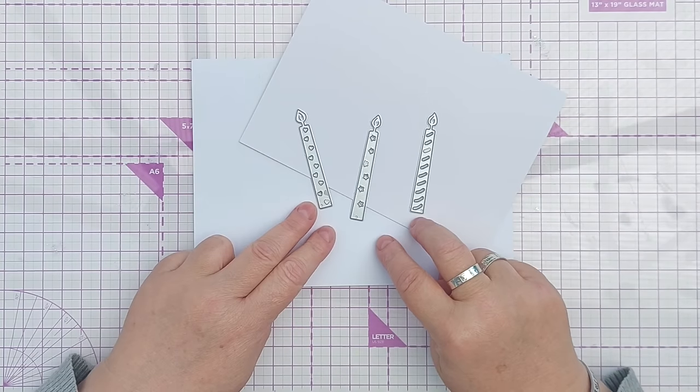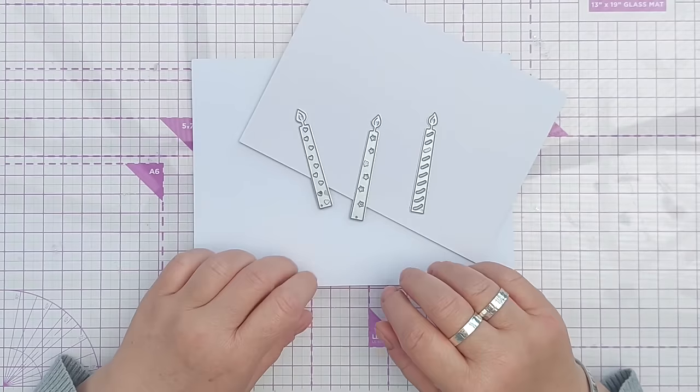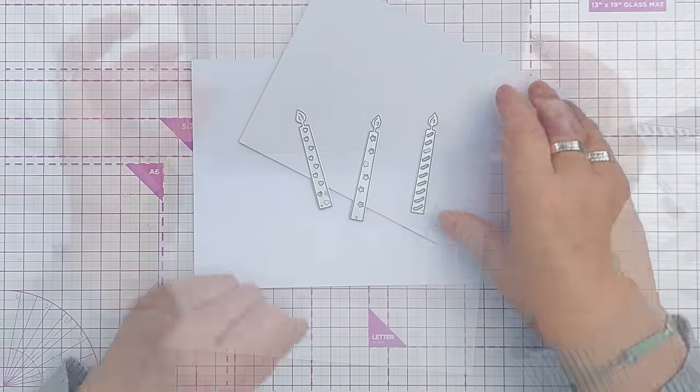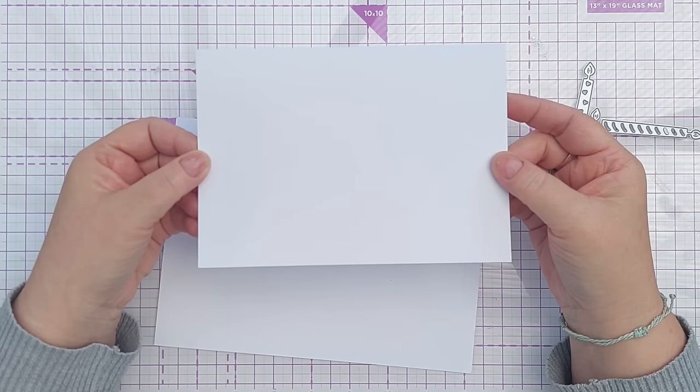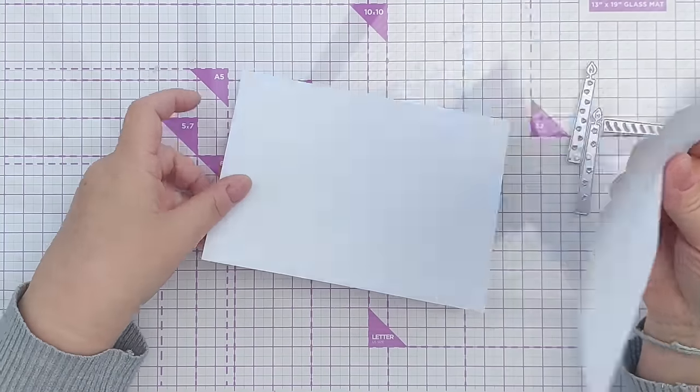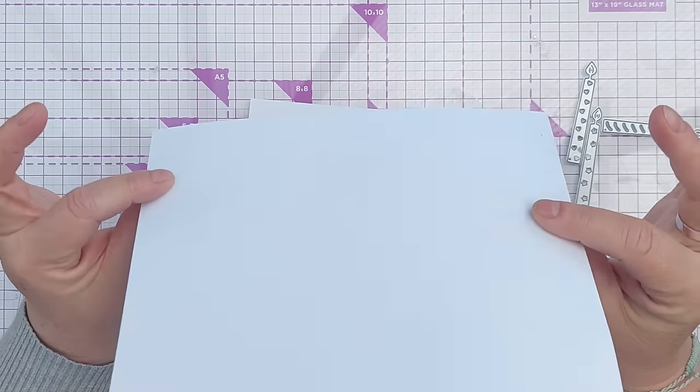If you haven't got any candle dies but you want to do this, stick around to the end of the video because I'll show you another way of creating your candle stencil. My card blank is five by seven inches smooth white cardstock, and I've got another piece of paper here that's a bit thinner, and this is going to be what I make my stencil from.